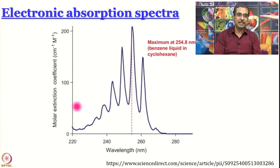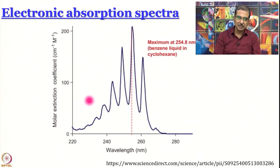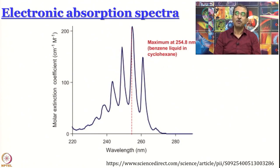The second thing is the y-axis — actually there are three things to discuss. The y-axis is molar extinction coefficient in per molar per centimeter. The third aspect is to look at the spectrum itself: the spectrum is highly structured. Why is the spectrum highly structured, and are all spectra highly structured? By the time we are done today we will know the answer to these questions.